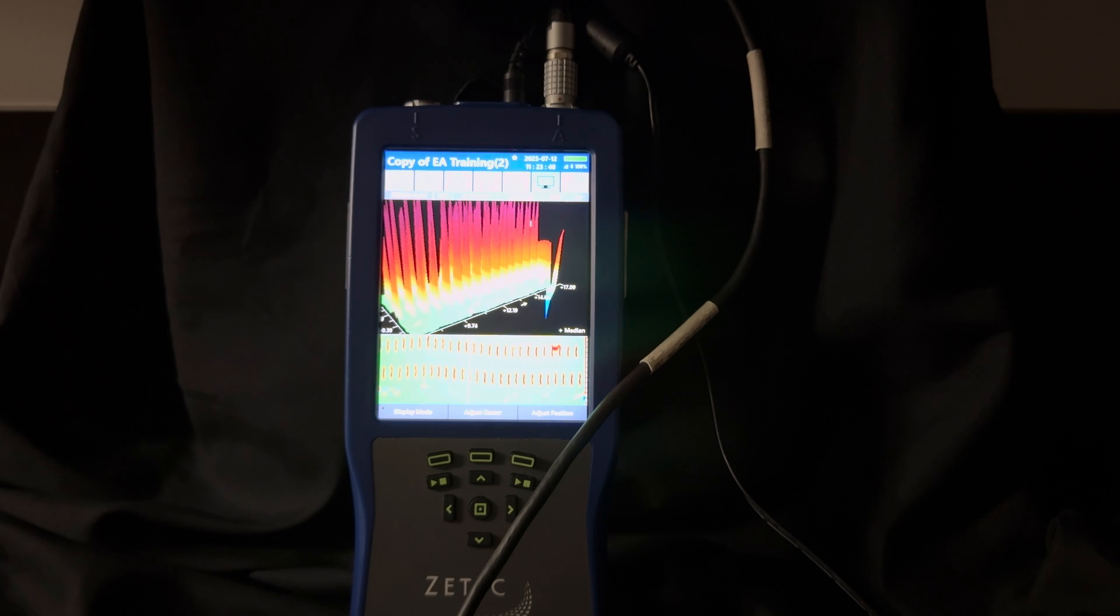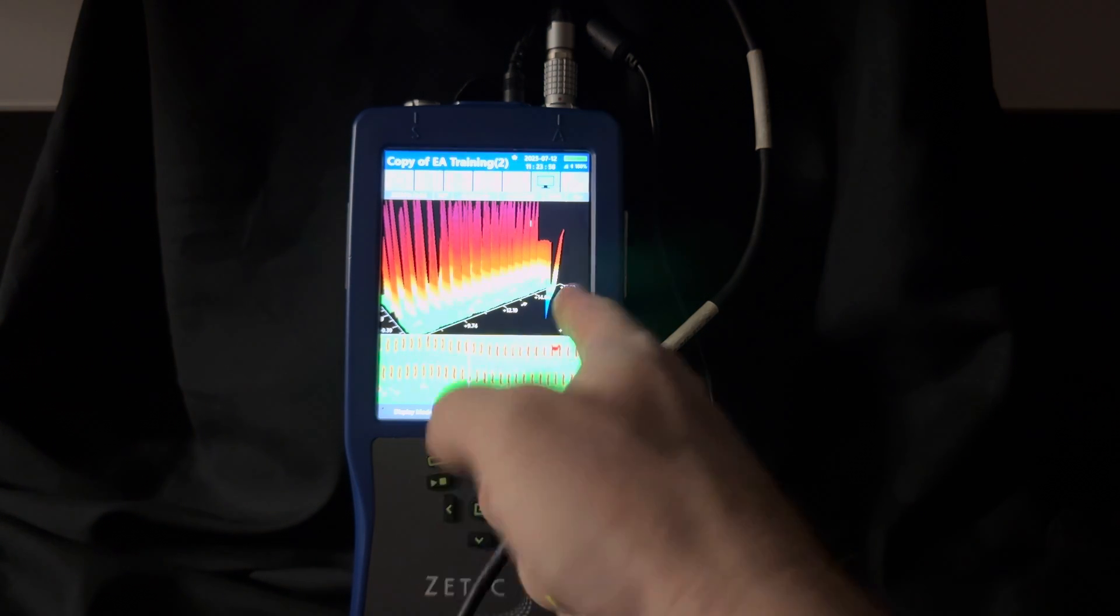If you're doing a large heat exchanger, you're going to see thousands and thousands of tube support plates. Most of them are probably going to look nearly identical. Same thing when you're looking at rivets.